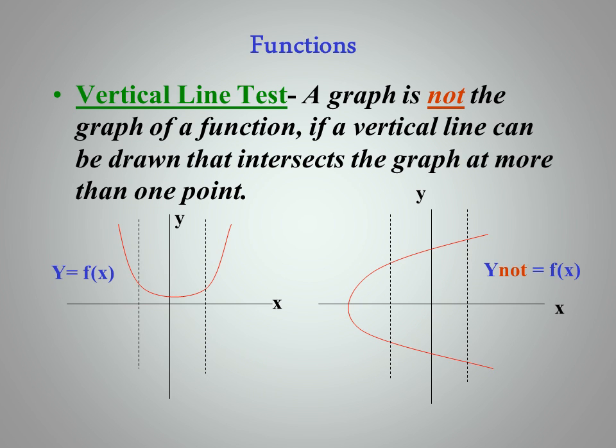The way we find whether a relationship is a function or not is by using the vertical line test. And if we graph the function, a graph is not the graph of a function if a vertical line can be drawn that intersects the graph at more than one point. This is the case at right. This is a radical plotted. And you'll notice there are two values of Y for any value of X. And therefore, it's not a function.